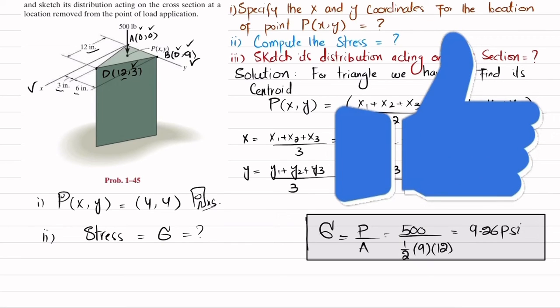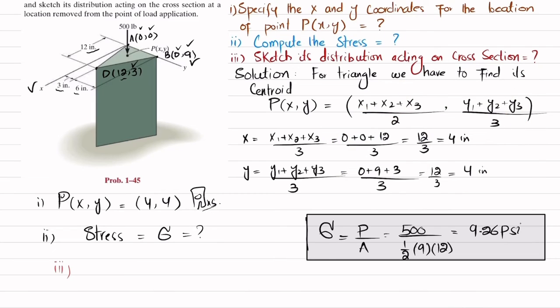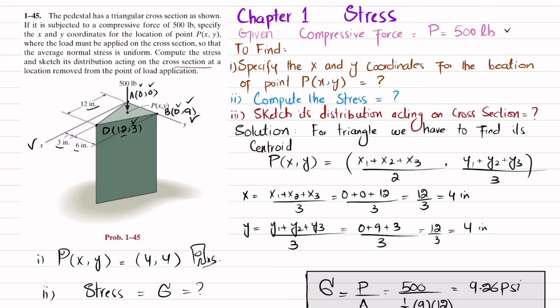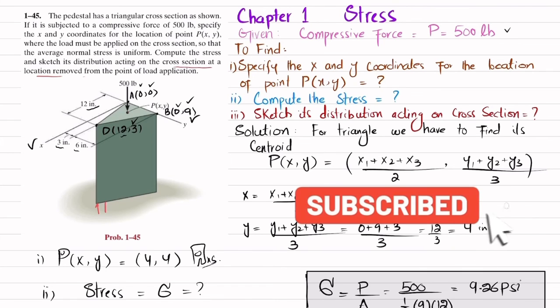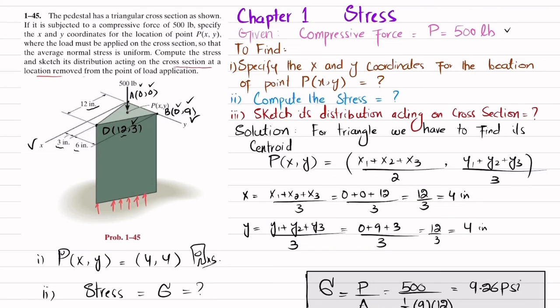Now in the third part, we have been asked to sketch the stress distribution acting on the cross section at a location removed from the point of application. The stress distribution will be like this: as the load is compressive, the load will be like this, similarly on this face, and on this face the stress will be downward.